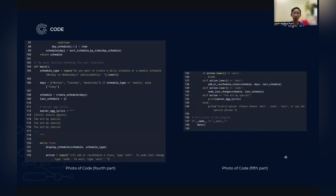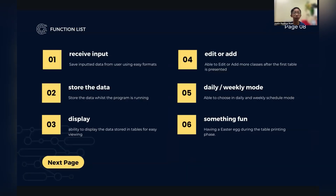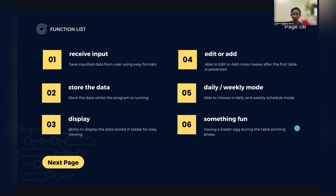The code is 138 lines long. Its key features are: receiving input to save user data in easy formats, storing data while the program runs, displaying data in tables for easy viewing, editing or adding more classes after the first table is presented, choosing between daily and weekly schedule mode, and having an easter egg during the table printing phase — which I will demonstrate later.